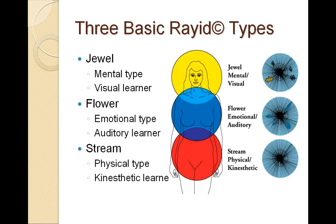In rayed iridology, they recognize three basic types: the jewel, the flower, and the stream — and I found this to be extremely accurate. Jewels are the mental types or visual learners and tend to have lots of little spots in their eyes. Flowers are the emotional types and tend to have rounded openings in their eyes. Streams are the physical kinesthetic types and tend to have an absence of markings. There's a fourth type called the shaker, which is a mixed type with elements of two or more of these patterns — people who have multiple learning patterns. Everybody has a dominant way that they learn; I'm an auditory learner, dominantly.